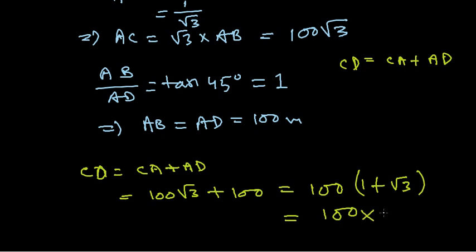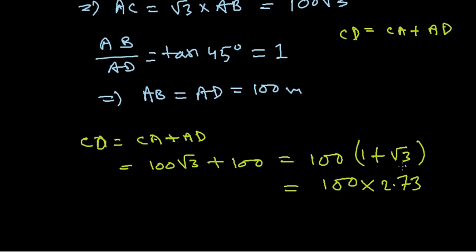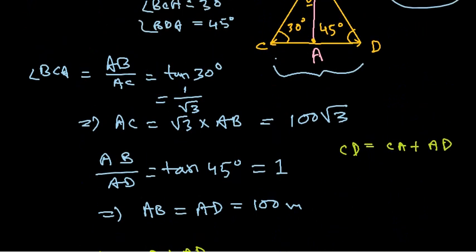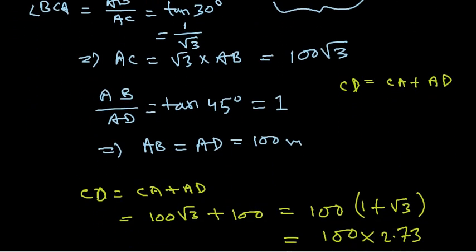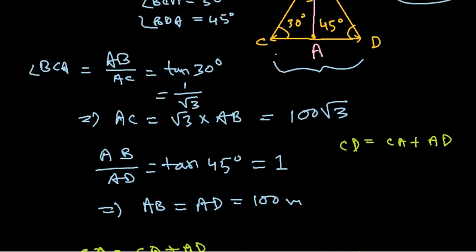We can take 100 out, giving CD = 100(1 + √3). The value of 1 + √3 is approximately 2.73, so the distance between the two ships is approximately 273 meters. This matches option C.